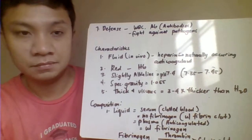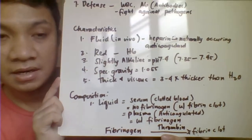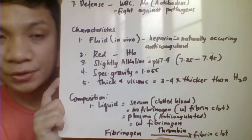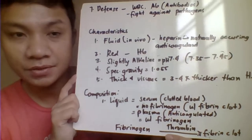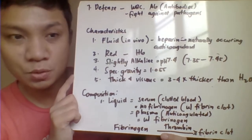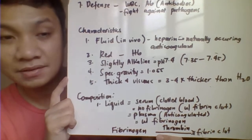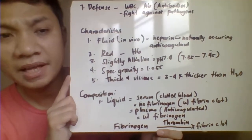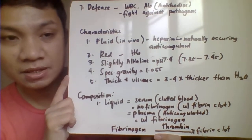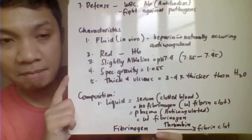Another function of blood is defense. Blood is home to the soldiers of our body — the white blood cells, or WBCs — whose main function is to remove pathogens that enter the body. These include phagocytic cells, or phagocytes, and the blood also contains antibodies that help fight against foreign antigens and pathogenic substances entering our body.